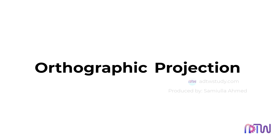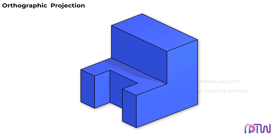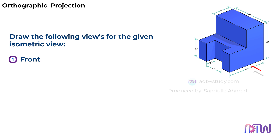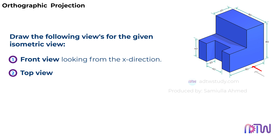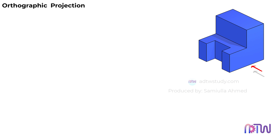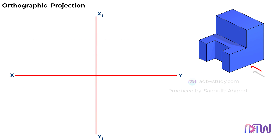Orthographic projection: in this video we will understand how to draw the orthographic projection using a simple example. The instructions are to draw the front view looking from the X direction, top view, and side view for the given isometric view. Since there are no instructions given for whether to draw using the first angle or third angle method, we will draw the orthographic view using the first angle method.